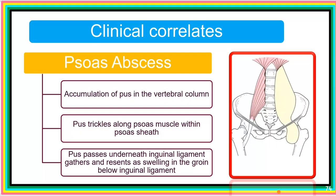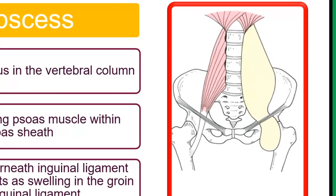The first clinical correlate is psoas abscess, where there is accumulation of pus in the vertebral column. The pus trickles along the psoas muscle within the psoas sheath and passes underneath the inguinal ligament to accumulate and present as a swelling in the groin, seen below the level of the inguinal ligament.